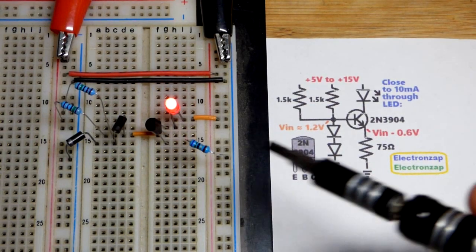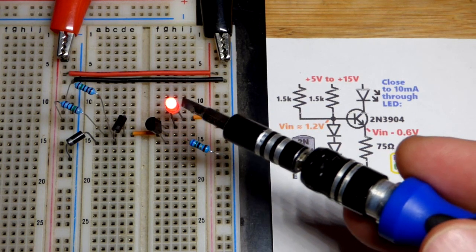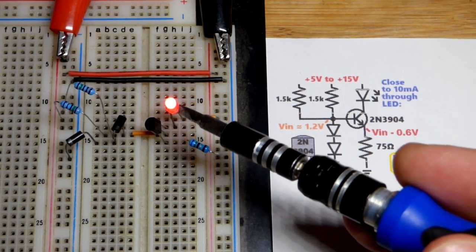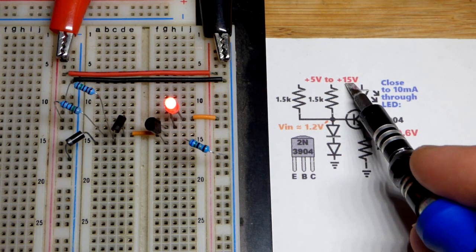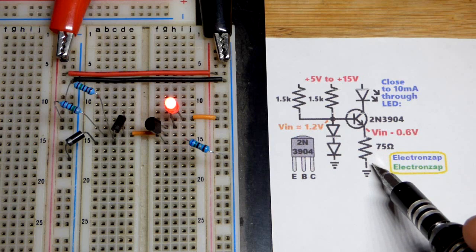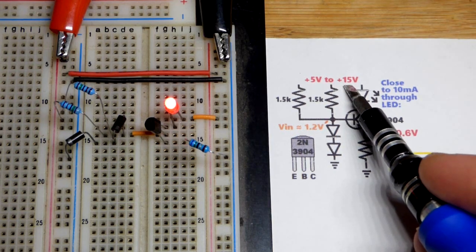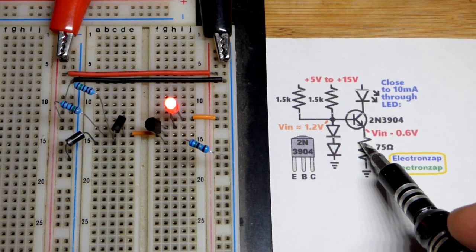In this video we have a circuit where we're setting the current through an LED. It will vary slightly, but whether we're using 5 volts or if we go up to 15 volts, which we can do safely the way we wired this up, we will still have approximately the same amount of current going through the LED.